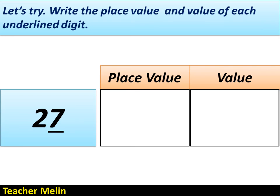How about this number? 27. The underlined digit is 7. What is the place value of 7? The correct answer is ones. And what is the value of 7? The answer is 7.